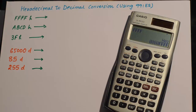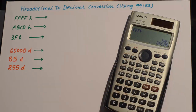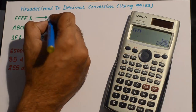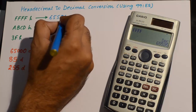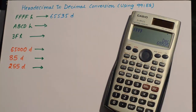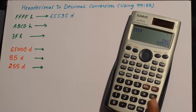To convert it into decimal I'll simply press the decimal button, and it converts the number into decimal which is 65535. So I'll write down 65535 as the decimal equivalent of the hexadecimal number FFFFF. How cool and simple is that! So I'll go back to hexadecimal numbers.